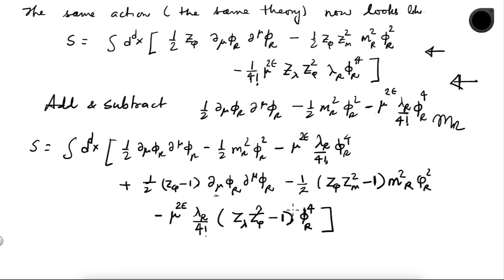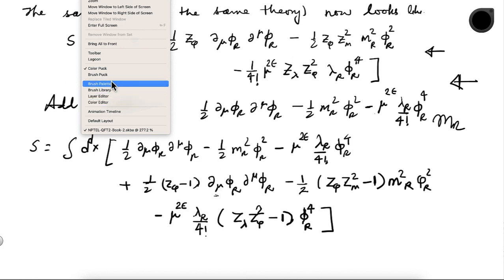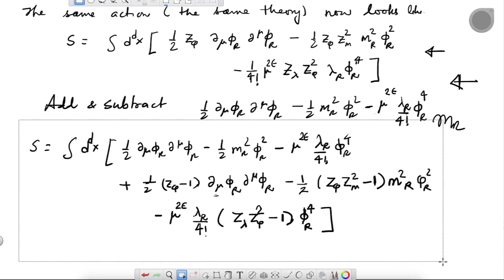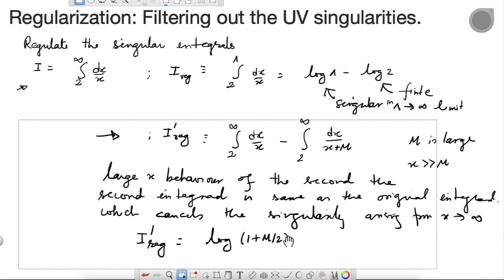Compared to the theory written in terms of phi, m, and lambda, the rewritten action has more vertices. Let me now give the Feynman rules.